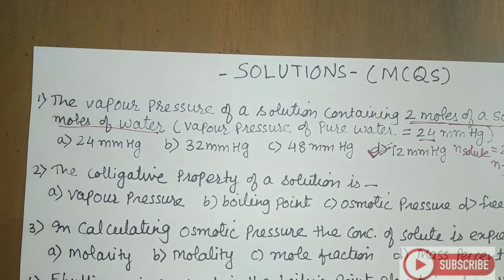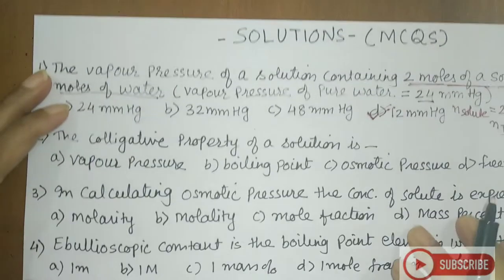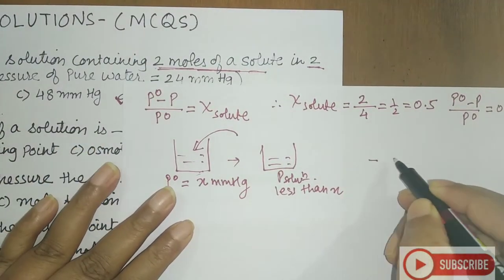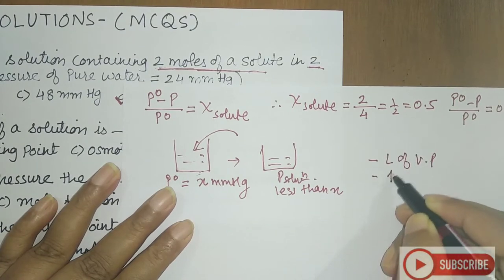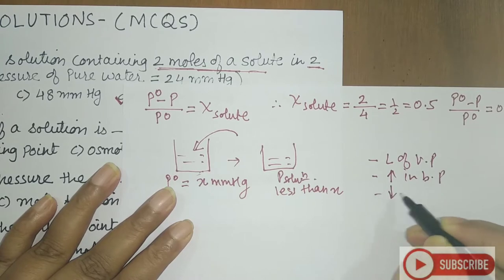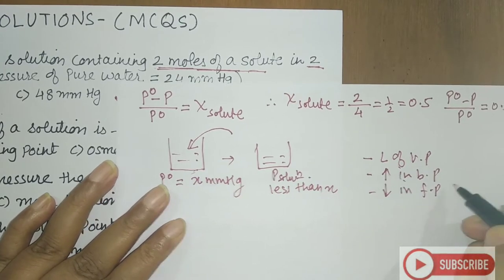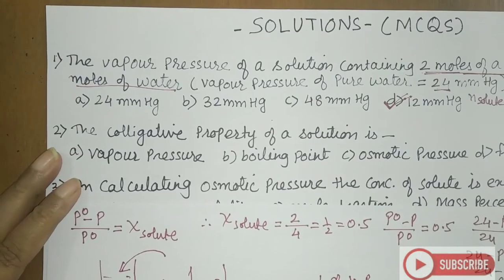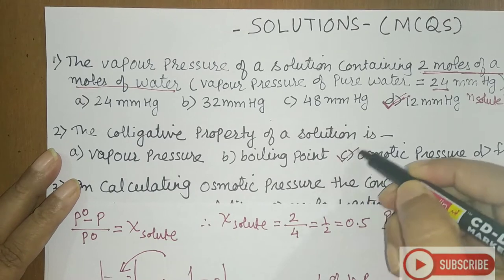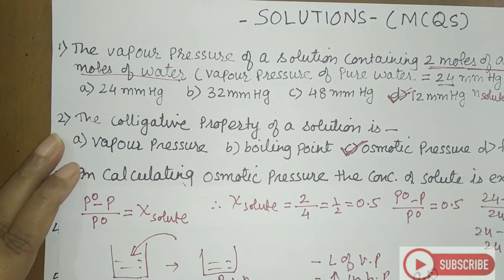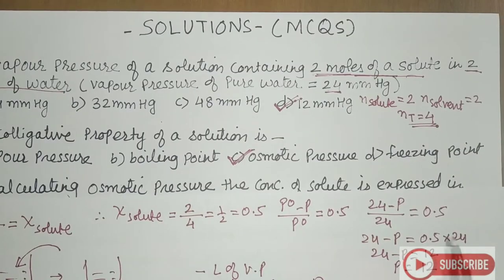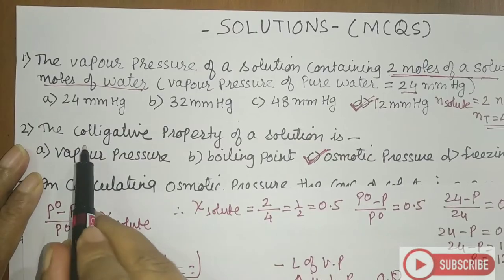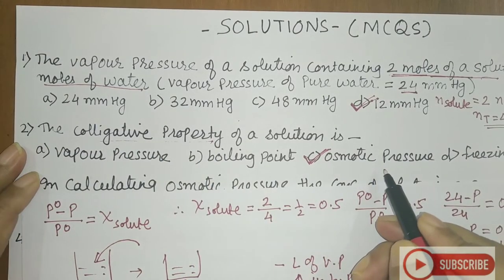The next question asks about a colligative property of a solution. The four colligative properties are: lowering of vapor pressure, elevation in boiling point, depression in freezing point of the solvent, and osmotic pressure. Vapor pressure, boiling point, osmosis, and freezing point themselves are not colligative properties. So the answer here is osmotic pressure.